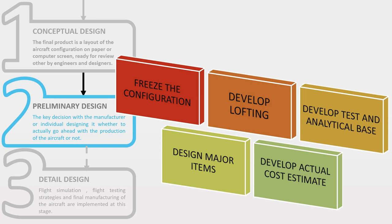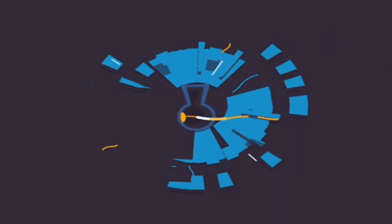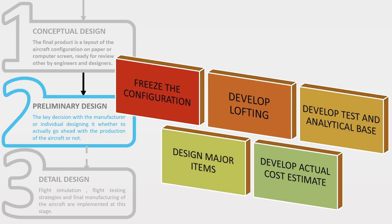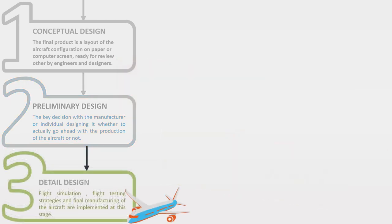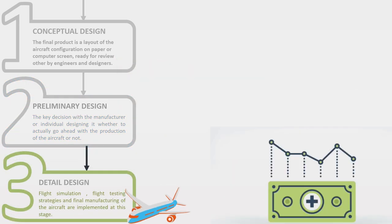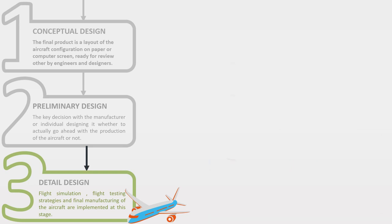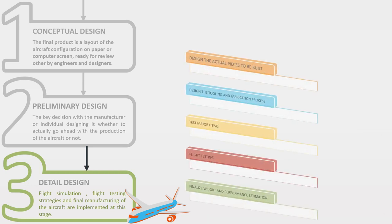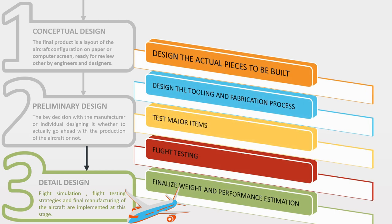After finalizing all design aspects, it leads to a very key decision with the manufacturer — whether to actually go ahead with production of the aircraft or not. Several designs are tested and analyzed, including performance and economic viability. If it is economically stable, it is moved to the next step, which is detailed design, dealing with the fabrication aspects of the aircraft to be manufactured.